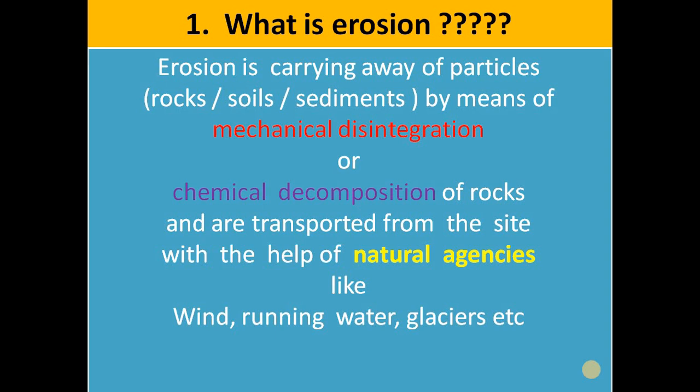What is erosion? Erosion is the carrying out of small particles of rocks, soils, sediments, etc., by means of mechanical disintegration or chemical decomposition of rocks. These particles are transported from the site with the help of natural agencies like running water, glaciers, wind, etc.